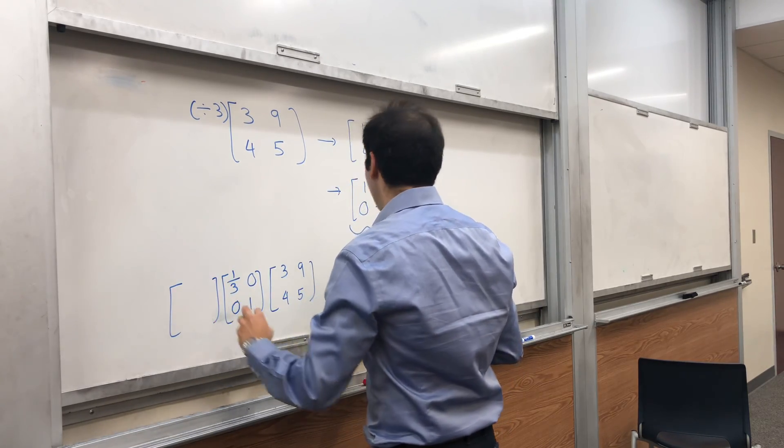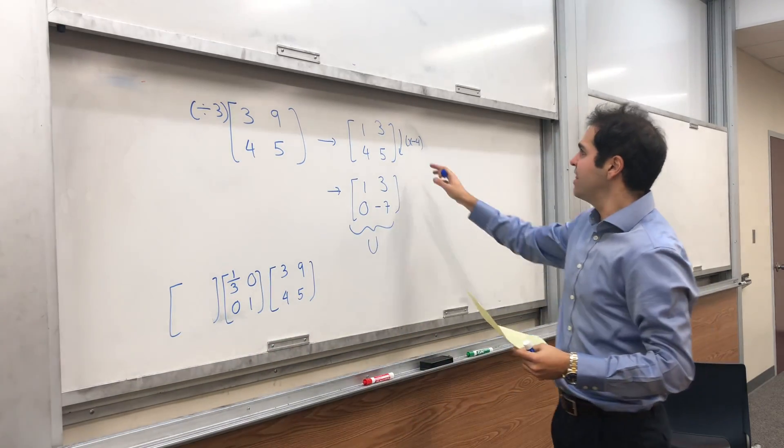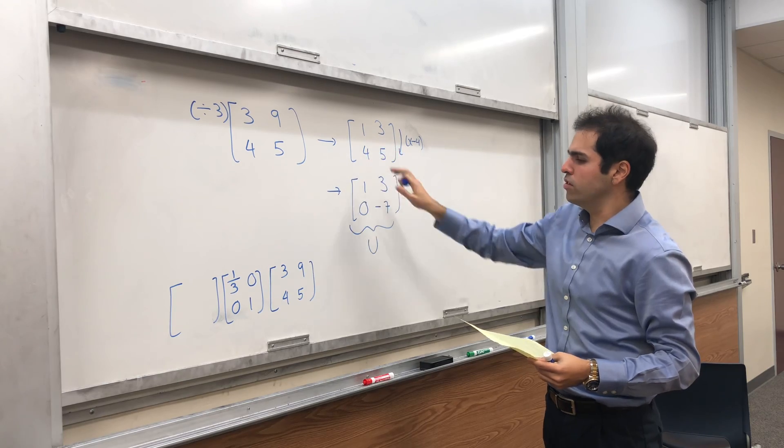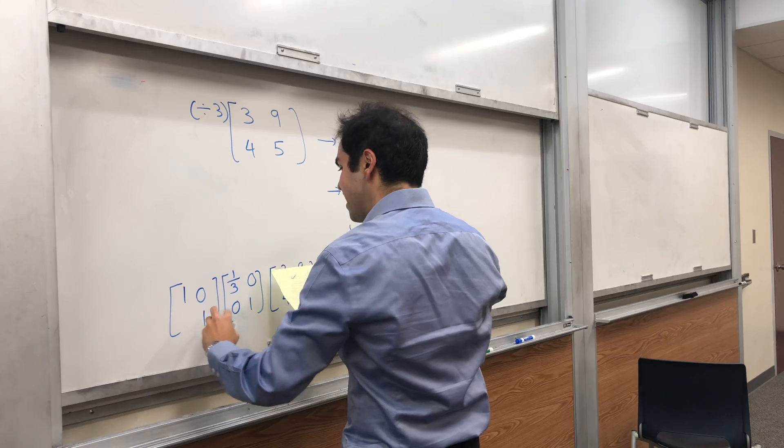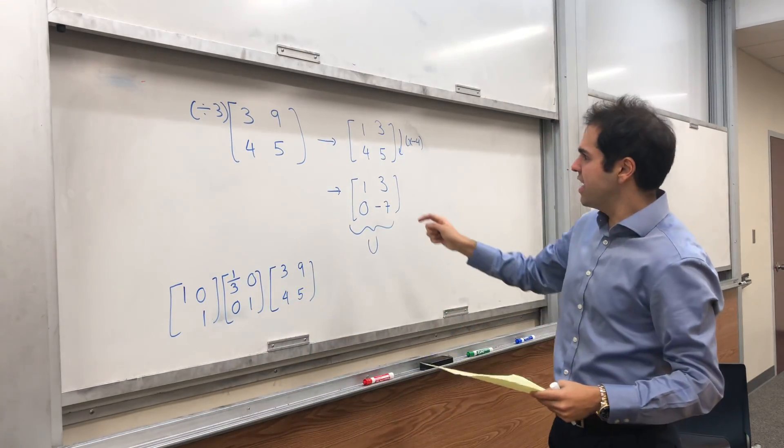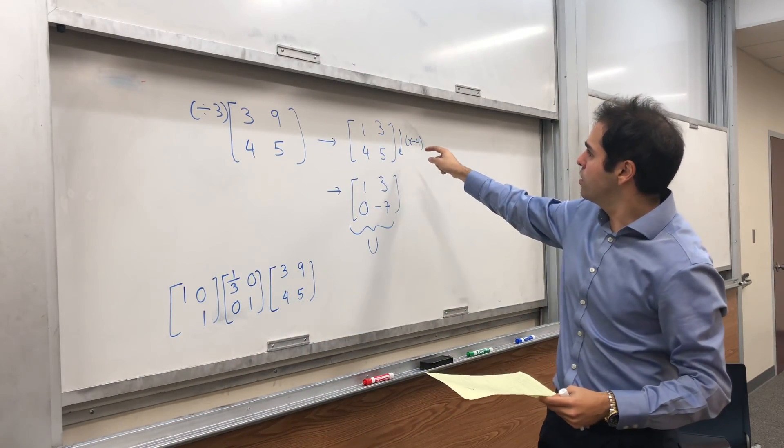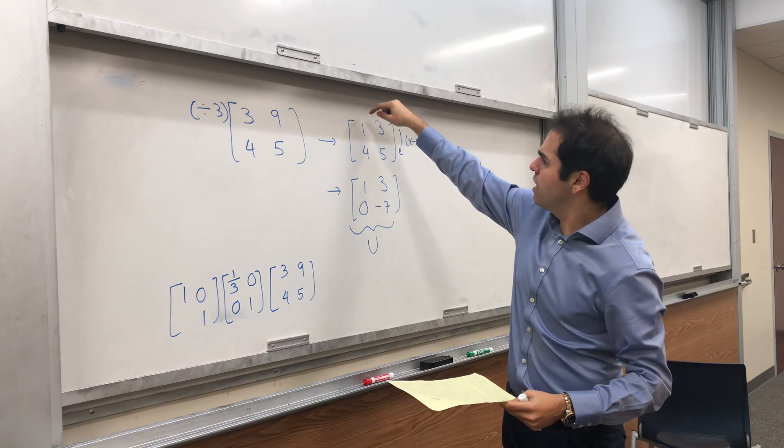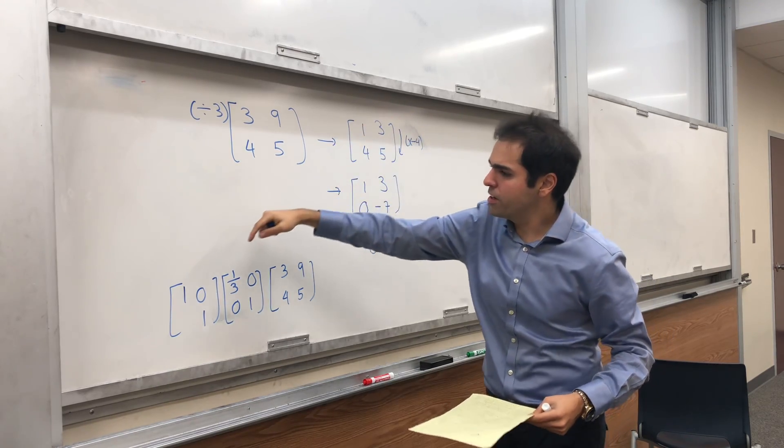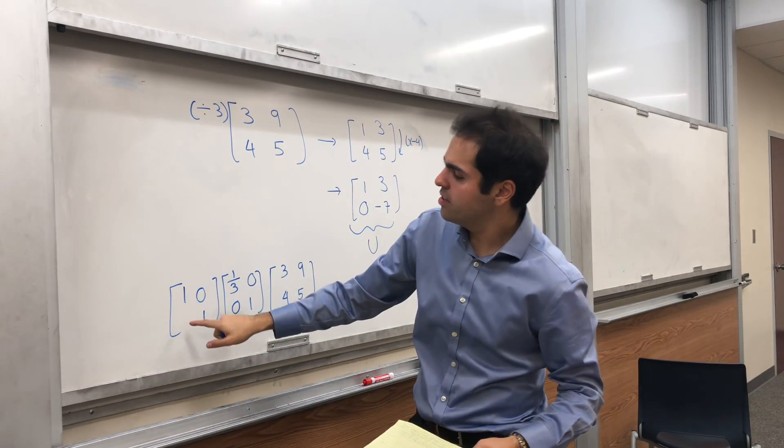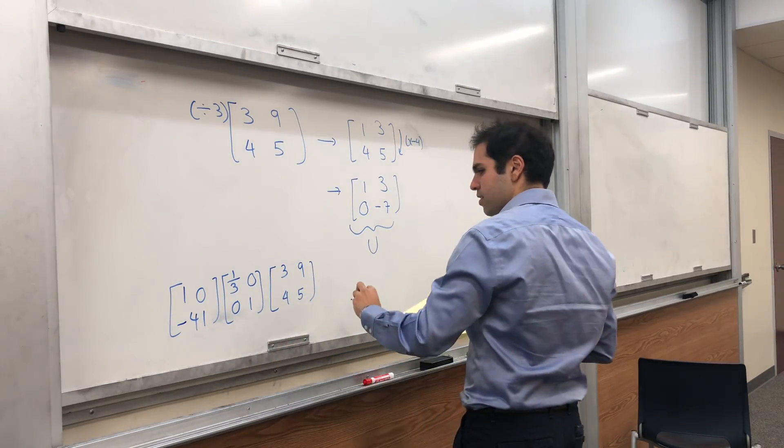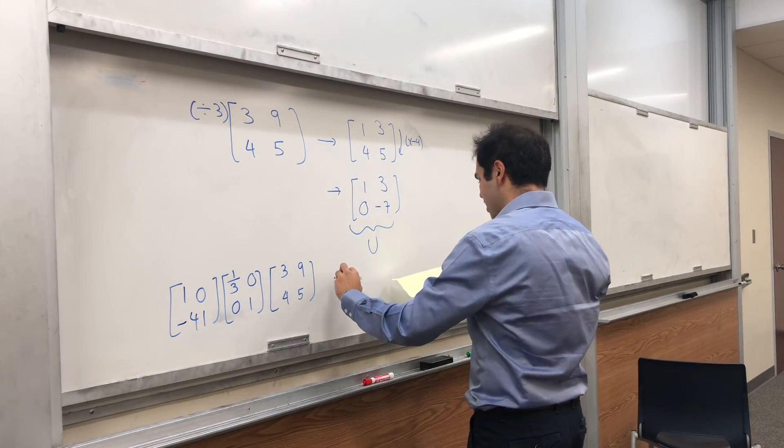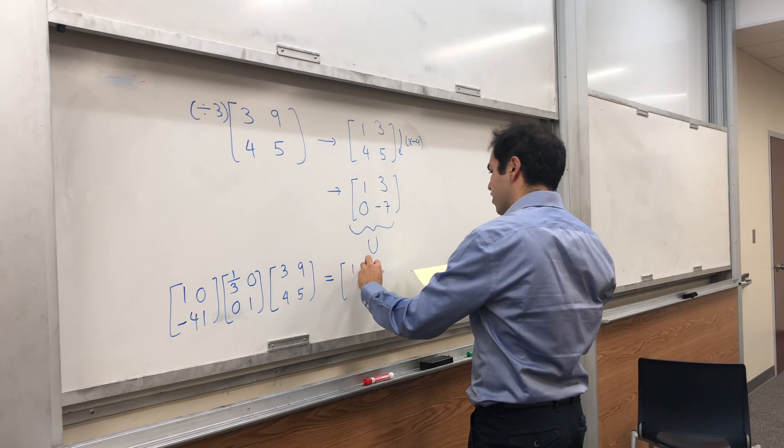Then, what was the second thing? We added negative four times the first row to this row, and we get simply one, it's the identity matrix, except, because you took minus four times the first row, which becomes the first column, to the second row, we have a minus four here. So, minus four, one, and we get our upper triangular matrix.